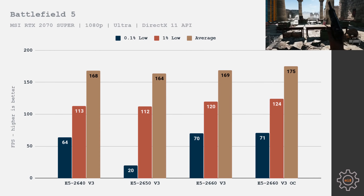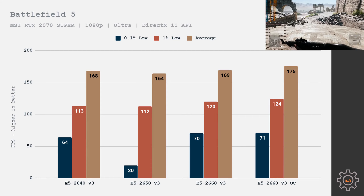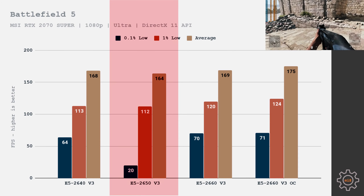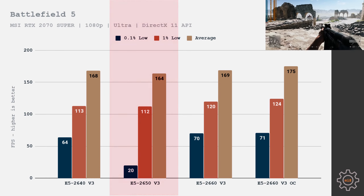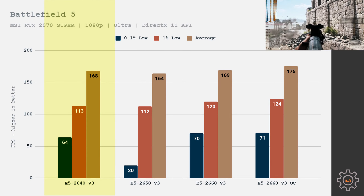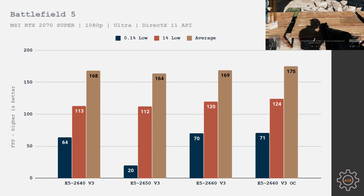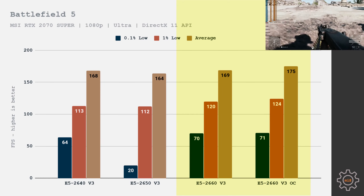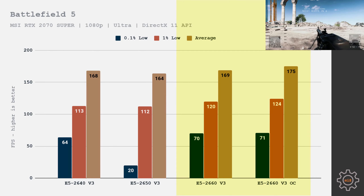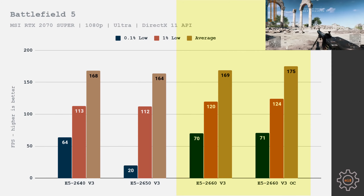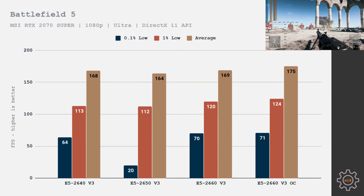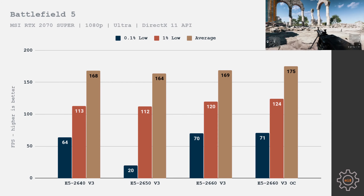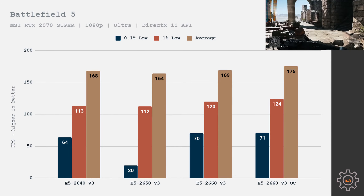Battlefield 5 was tested at 1080p, ultra graphics preset, DirectX 11. The 2650 struggles greatly — 0.1% low is just 20 fps, 1% low is 112 fps, and average is 164 fps. The 2640 shows 64 fps 0.1% low, 113 fps 1% low, and 168 fps average. The 2660 without overclock gets 70 fps 0.1% low, 120 fps 1% low, and 169 fps average. Overclocked values are slightly higher. For fast-paced FPS games like Battlefield 5 or Call of Duty, the E5 2650 is not the best choice — the 2640 and 2660 will do just fine.